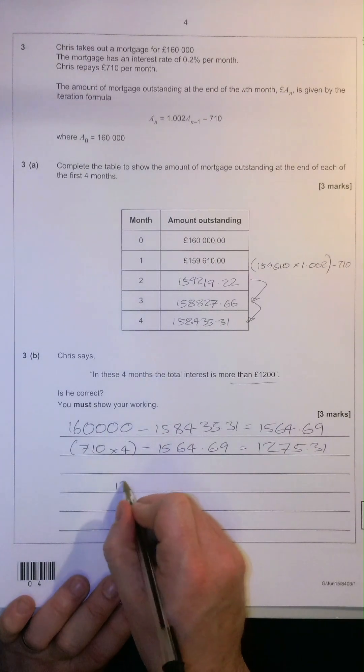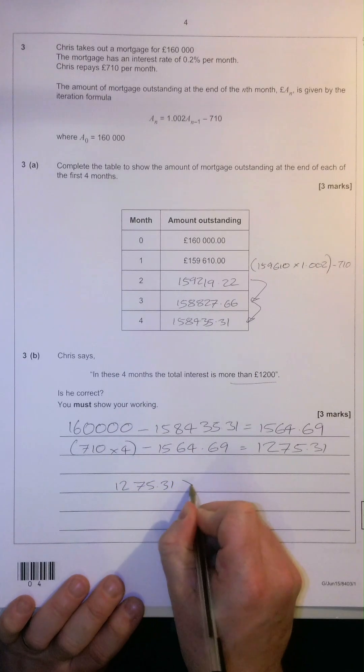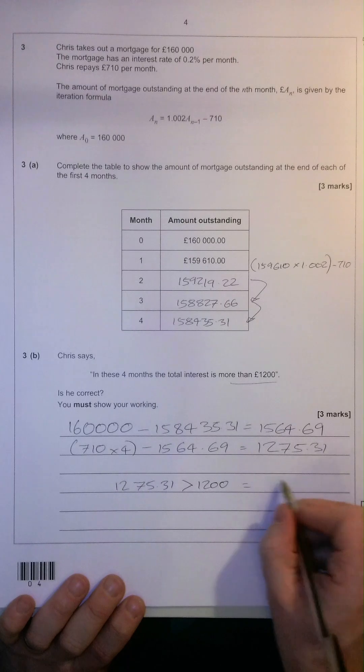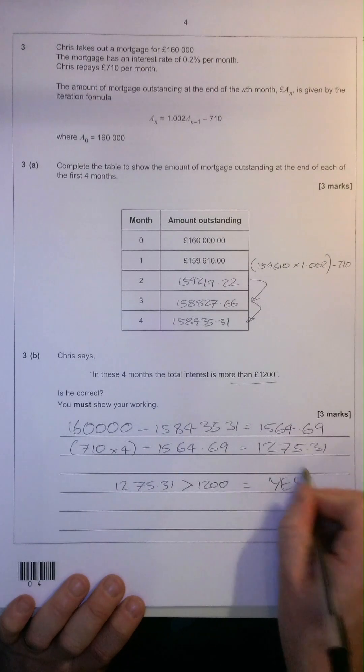Of course, £1,275.31 is of course greater than £1,200, so therefore, is he correct? Yes, he is.